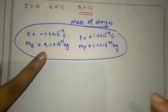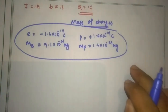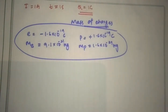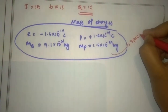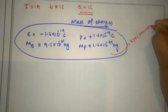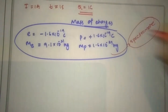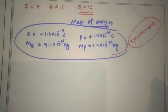The mass of the electron is a small value compared to the proton. The instrument used to measure these is called a spectrometer.